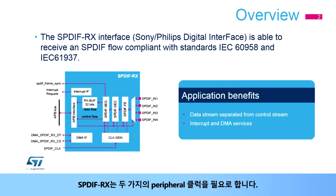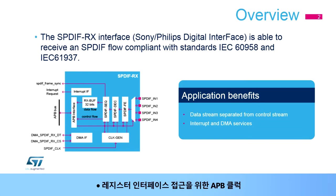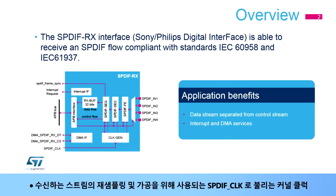The SPDIF-RX needs two peripheral clocks: an APB clock for the register interface accesses, and a kernel clock named SPDIF-CLK, which is used for the re-sampling and processing of the incoming stream.